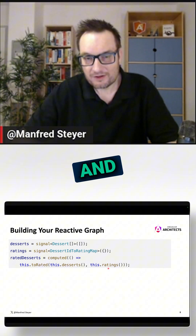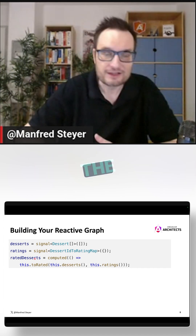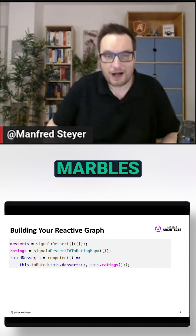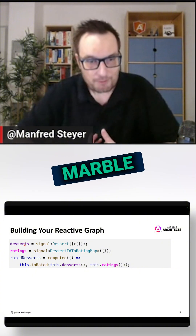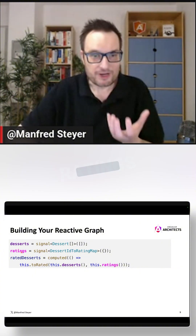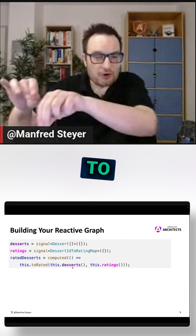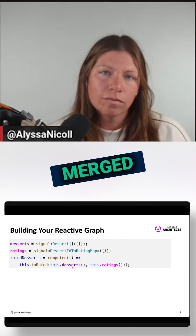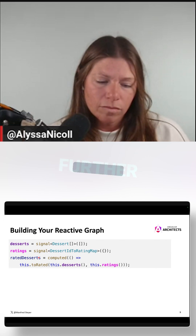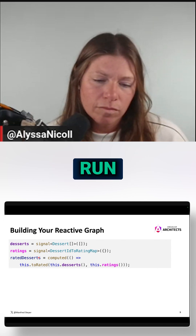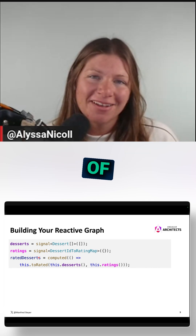Both come together — the desserts and the ratings are computed together to rate the desserts. In terms of marbles, desserts is my first marble, my purple marble, and ratings is a pink marble. Both marbles go in there to compute and are merged into my rated desserts marble, which flows further through my marble run and is finally displayed in the template.